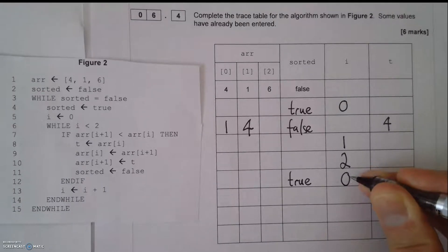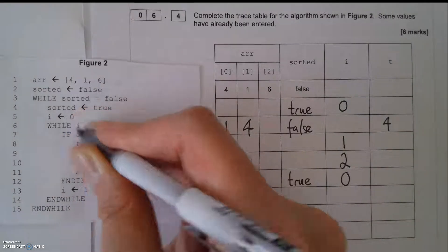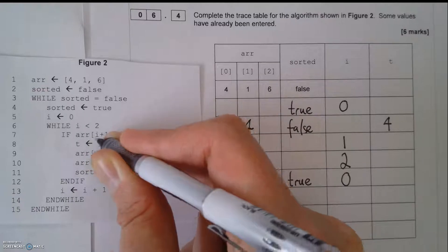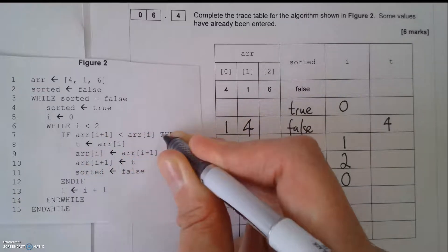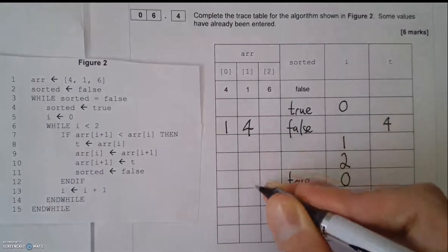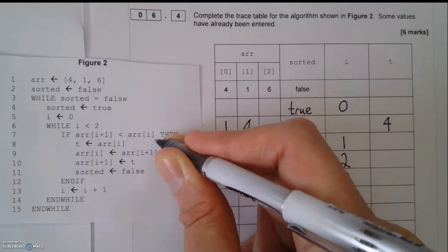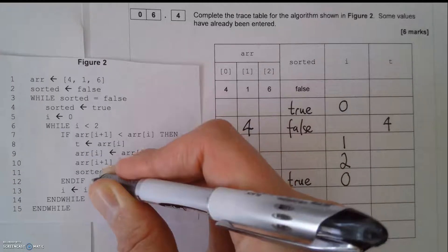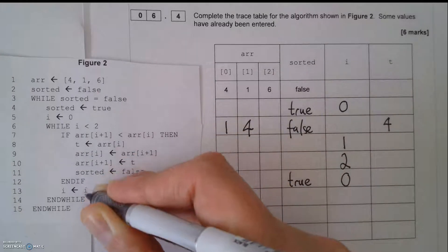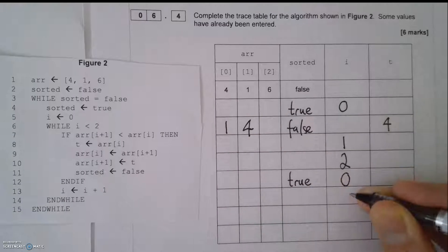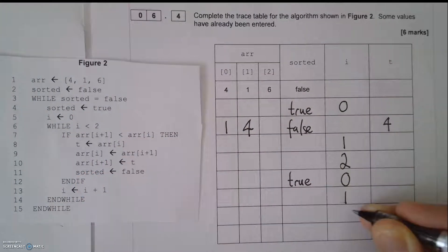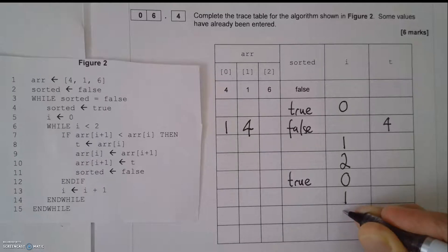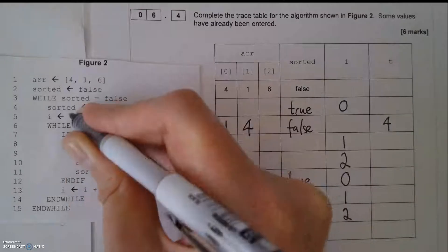While i is less than 2, yes it is. If array i plus 1 is less than array i, that hasn't changed. So it still doesn't meet that condition. So we can ignore these four lines of code. So I go straight down to here. i equals i plus 1. 1 in there. While i is less than 2, yes it is. i equals i plus 1, 2. Now I go back up to here. While sorted equals false, it no longer is. It's true. So I have now finished my program. I've now finished my dry run.